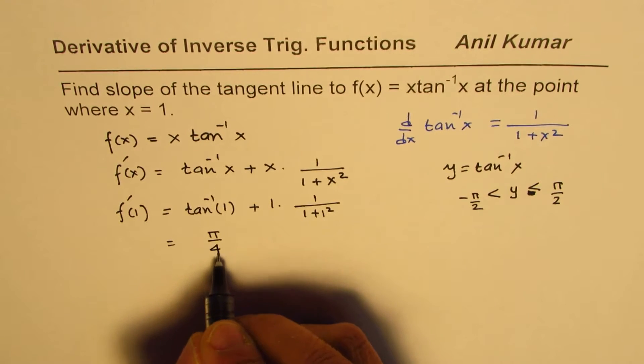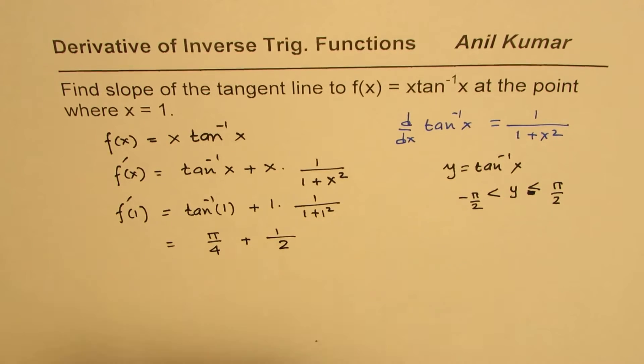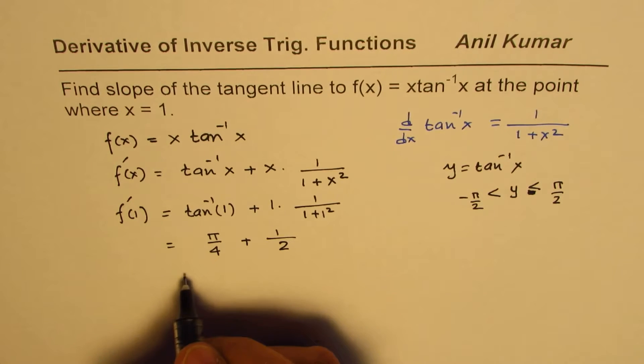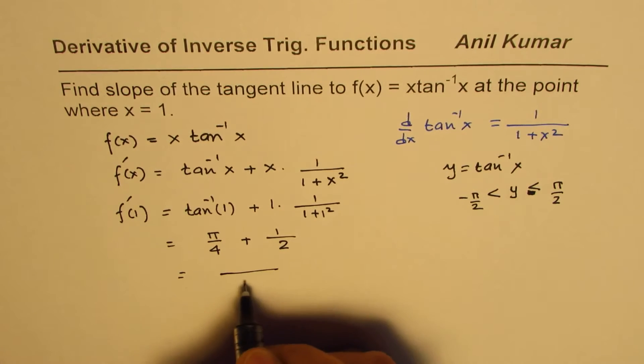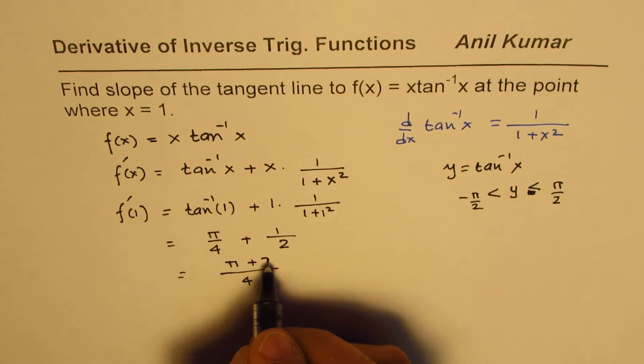So this is π/4 plus 1 over 1 plus 1 is 2. That is the slope. You can take common denominator which is 4, and then here you get π + 2.